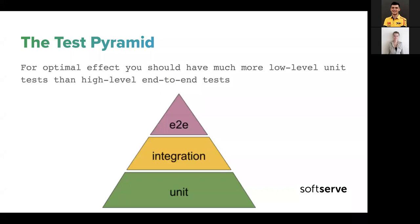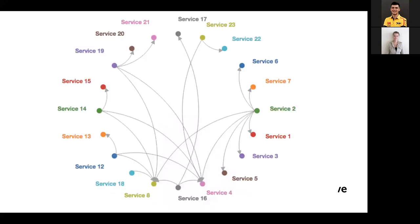What is the testing pyramid? You all know what unit tests, integration tests, and end-to-end tests are. For optimal effect you should have many more low-level unit tests than high-level end-to-end tests. You probably know why: if you have a small environment or small project with a couple of microservices, it's fine — you can write a couple of integration tests and everything will be covered.